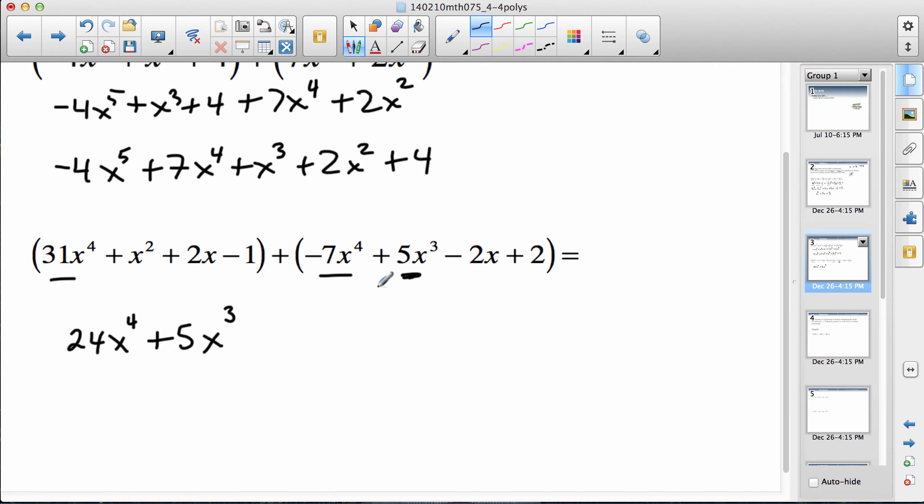x squared, there's just one of those, so plus x squared. x terms: 2x minus 2x, they cancel so it's 0x, I wouldn't need to write those. Minus 1 plus 2 would be a positive 1. There we go, that's the sum of those ones. So that's adding, that's not too bad. Now let's do a quick little thing before we subtract.